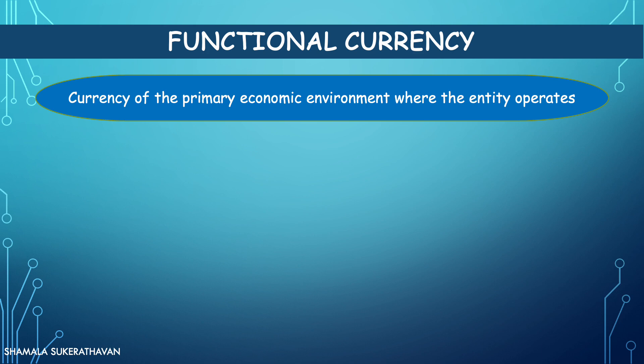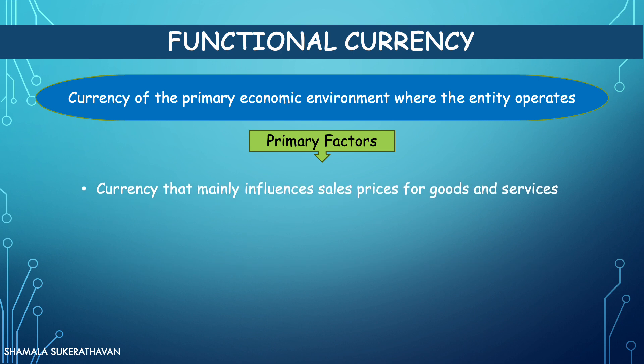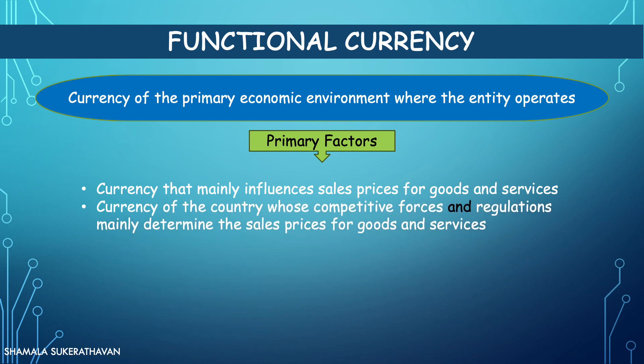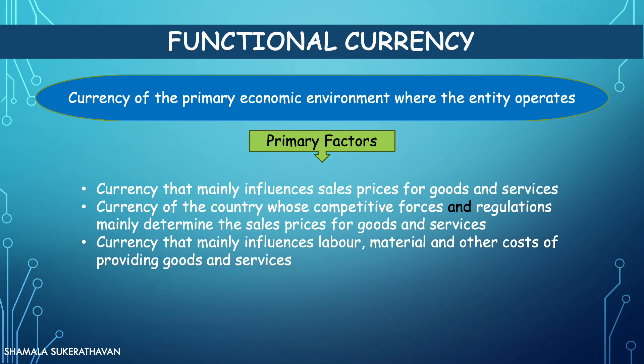In determining an entity's functional currency, IAS 21 stipulates an entity should consider the following primary factors: 1. The currency that mainly influences the sales prices of the entity's goods and services — this is often the currency that sales prices are denominated and settled. 2. The currency of the country whose competitive forces and regulations mainly determine the sales prices of goods and services. 3. The currency that mainly influences labour, material and other costs of providing the entity's goods and services — this is often the currency such costs are denominated and settled.